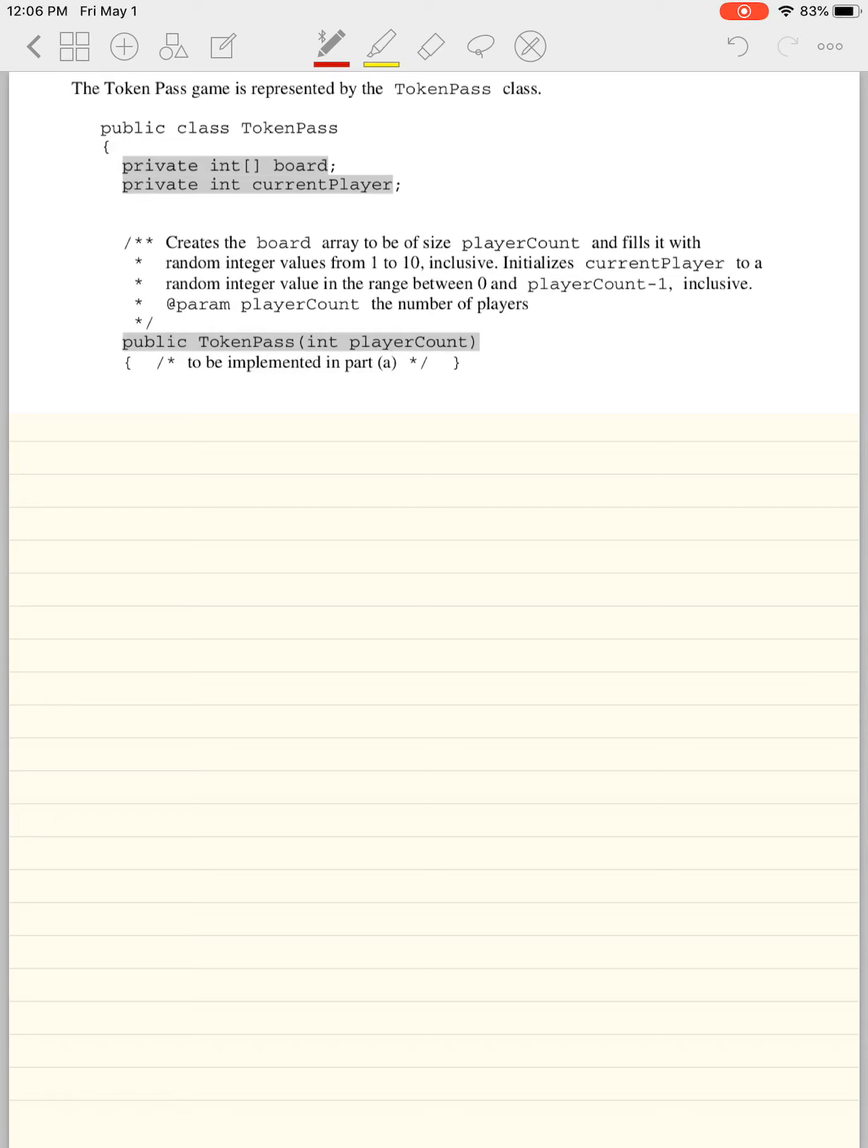So it says the token pass game is represented by the token pass class, and you have this board. This board is this right here, what we just saw, okay? It's a fixed number, and we have current player. All right, so we're going to take public token pass, and we're going to pass through the player count. It's going to create a board of the array to be of size player count and fill it with a random value between one and ten inclusive. Initializes current player to a random integer value in the range between zero and player count minus one. The parameter player count tells you the number of players.